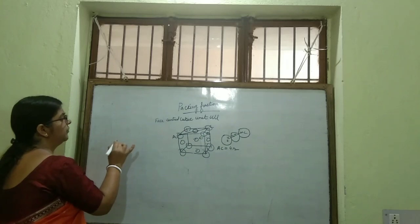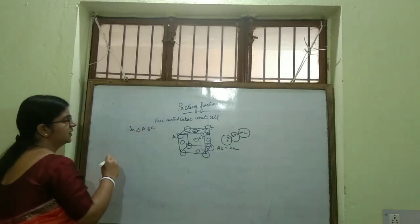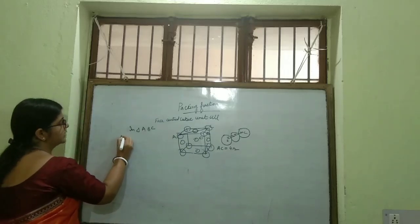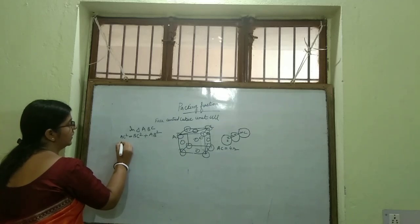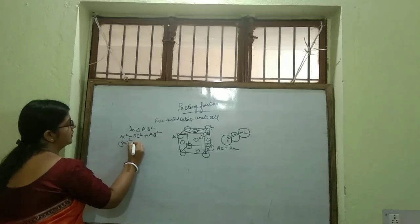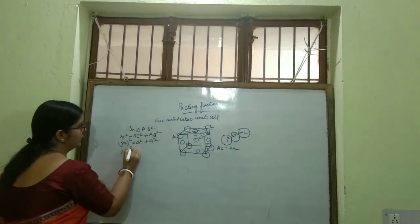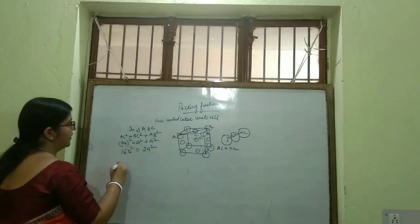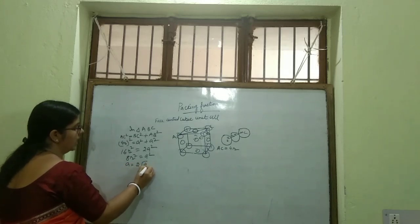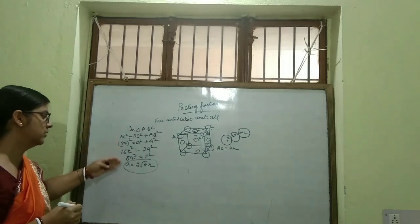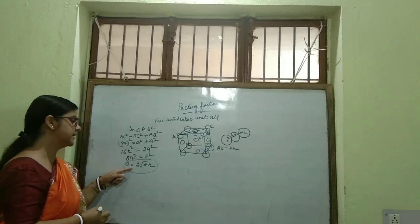Now we will proceed. In triangle ABC, this is a right triangle. So, hypotenuse squared: AC² = BC² + AB². We have AC = 4R, so (4R)² = A² + A², giving 16R² = 2A², which means A² = 8R². Therefore, A = 2√2R. This is the relationship between edge length and radius of the sphere for FCC.